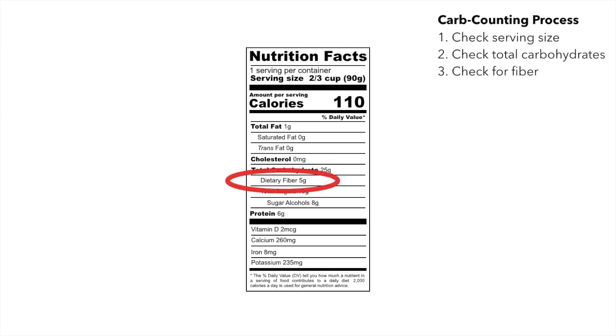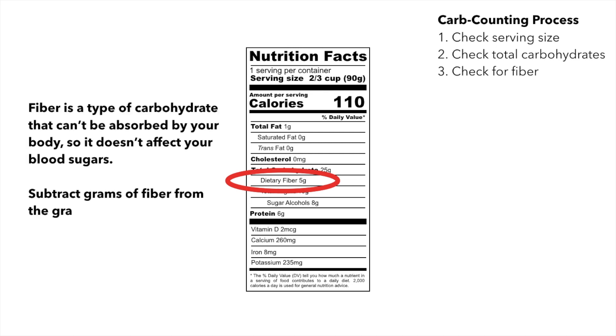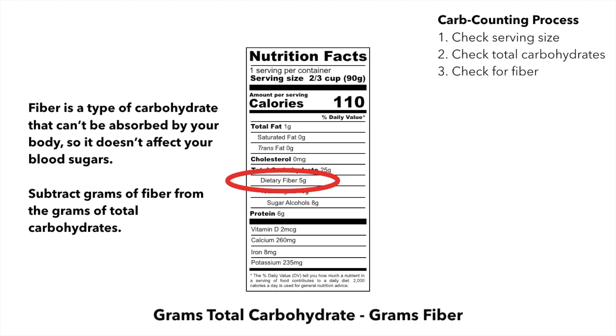Look and check if there is any fiber. Fiber is a type of carbohydrate that your body can't absorb, so it doesn't affect your blood sugars. Subtract the grams of fiber from the grams of total carbohydrates.